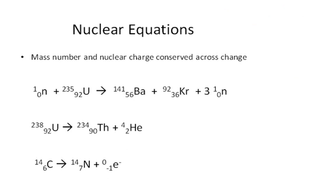We've seen these nuclear equations, and what we've learned is that mass number and nuclear charge are conserved across the change. This first equation right here is a classical fission reaction, where we've got your uranium-235 nucleus. We bombard it with a neutron that has moderate kinetic energy.